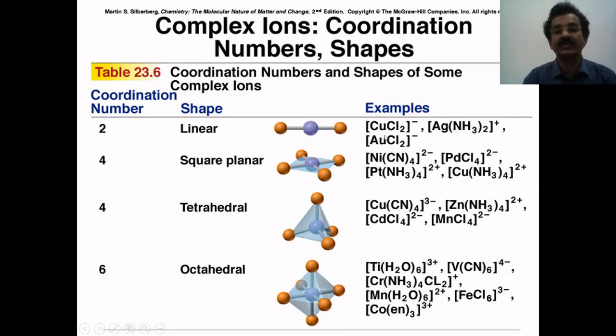Some complexes have a coordination number of 2, and therefore they can exhibit linear geometry. Examples include diamino argentate and dichlorocuprate.